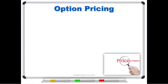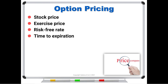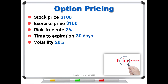Let's go to a pricing model. In a five-factor model — the Black-Scholes without dividends — we have the stock price, the exercise price, risk-free rate of interest, time to expiration, and volatility. Let's put some numbers in: the stock is currently at $100, we have an at-the-money $100 exercise price, risk-free interest rate of 2%, time to expiration is 30 days, and volatility at 20%. If you put this into a pricing model, it will tell you that the call price is $2.36.